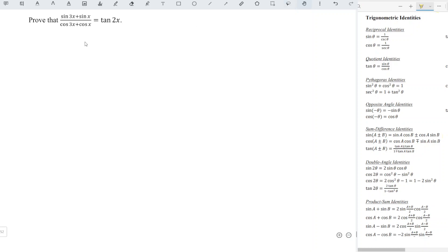Today I'd like to share the proof of this trigonometric identity. The left hand side is equal to sine 3x plus sine x divided by cosine 3x plus cosine x. We can apply the product-sum identities, using the first one and the second one.